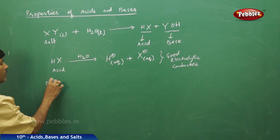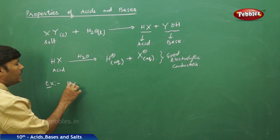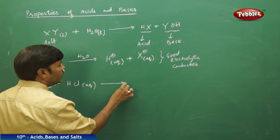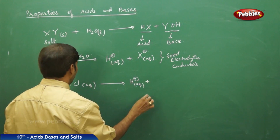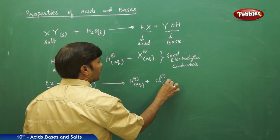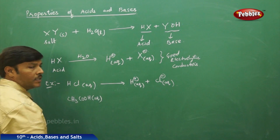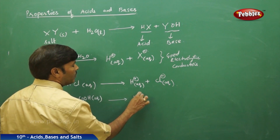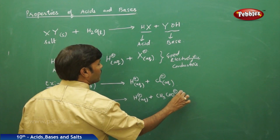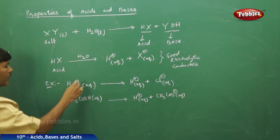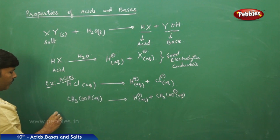Here is one specific example: if HX is the general formula for an acid, take HCl (aqueous). Aqueous means water has already been added to the acid. It dissociates to give H+ ion (aqueous) plus Cl- ion (aqueous). You can take these kinds of examples for all acids.